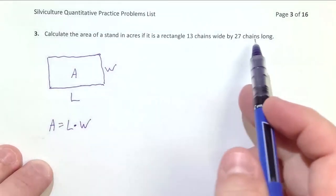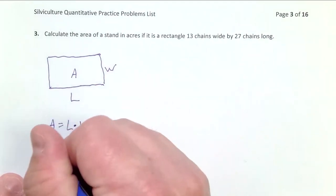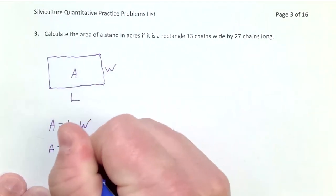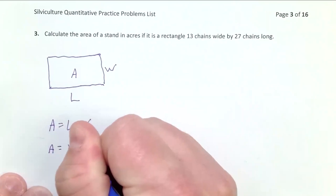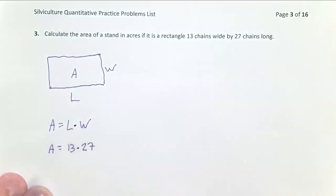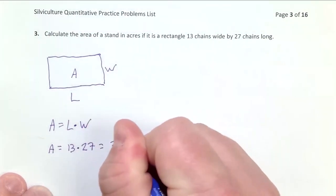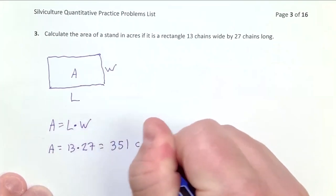We've been given the length and the width, so here area is simply going to equal 13 for the width, 27 for the length. It doesn't matter if you switch these back and forth due to the properties of multiplication.